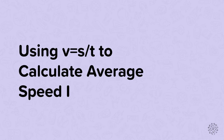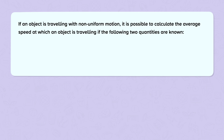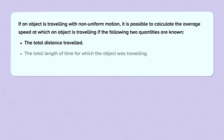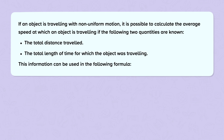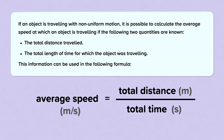Using V equals S divided by T to calculate average speed. If an object is travelling with non-uniform motion, it is possible to calculate the average speed if the following two quantities are known: the total distance travelled and the total length of time for which the object was travelling. Average speed is equal to total distance divided by total time, where average speed has the unit metres per second, total distance has the unit metres, and total time has the unit seconds.